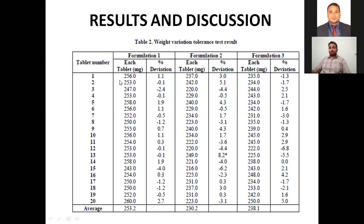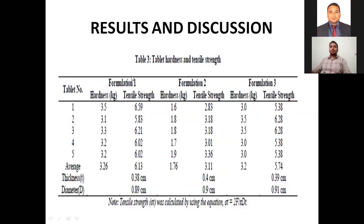Next come to the hardness of the tablet. Using the Monsanto hardness tester, we are calculating the hardness. It is 3.5, 3.1, 3.3, 3.2 and so on. The hardness of the tablet is given here. Then tensile strength and hardness you can calculate.